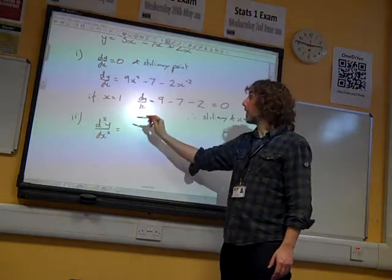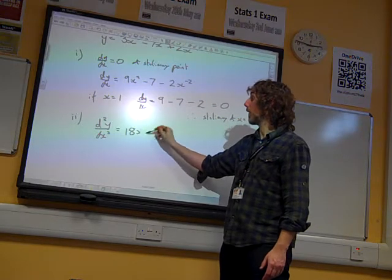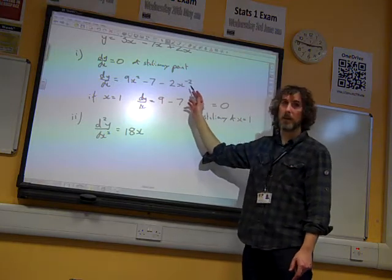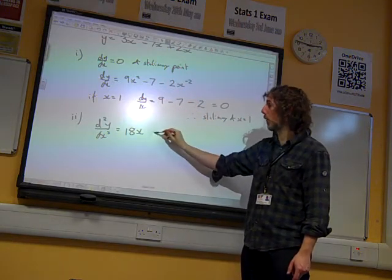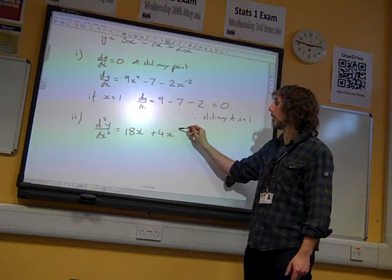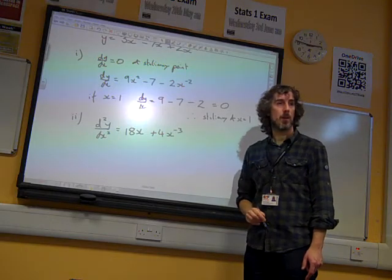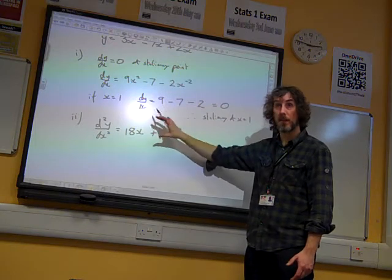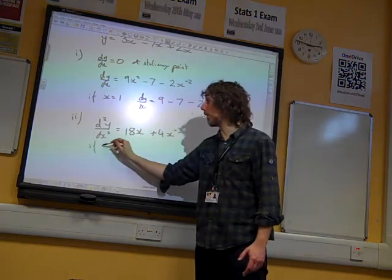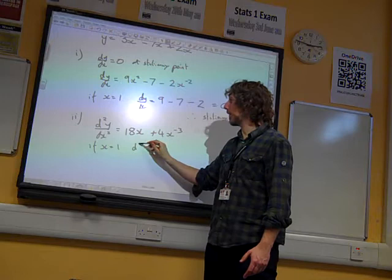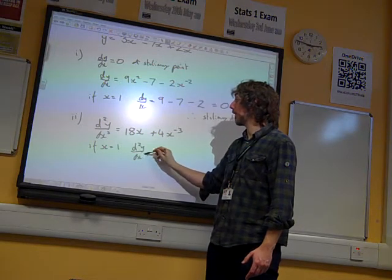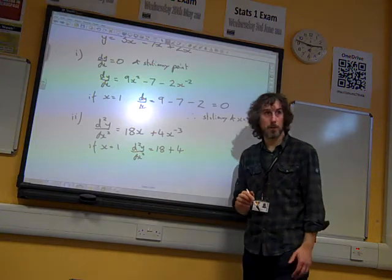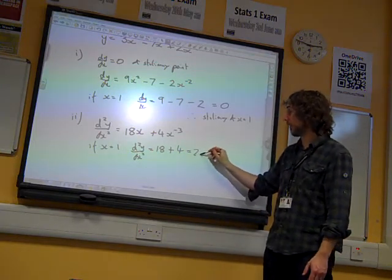What we're going to do is 18x, the minus 7 is going to go to 0, and then this bit, we're going to bring the minus 2 down to make it plus 4x to the minus 3. Now what matters is what this is doing when x equals 1. So if x equals 1, this is going to be 18 plus 4 over 1 cubed, so 18 plus 4, which is 22.